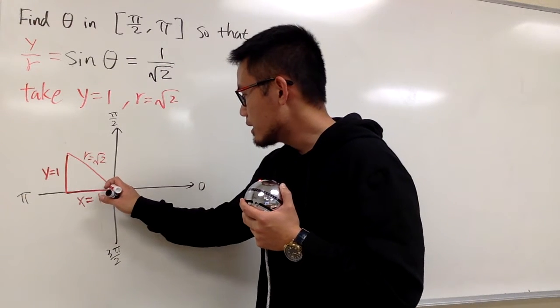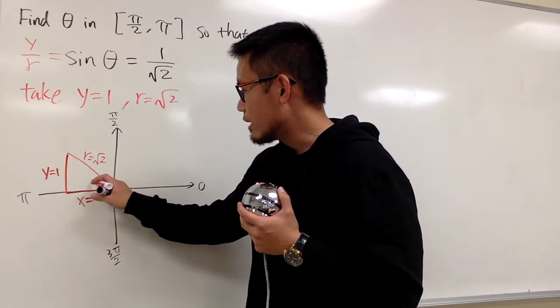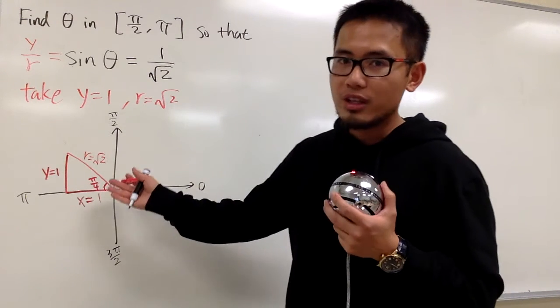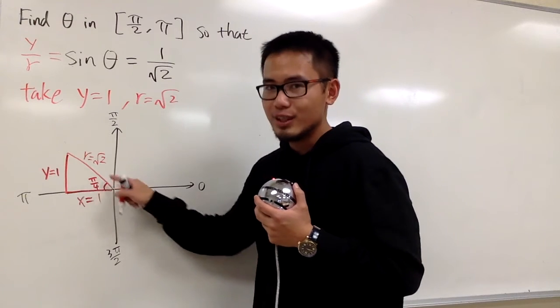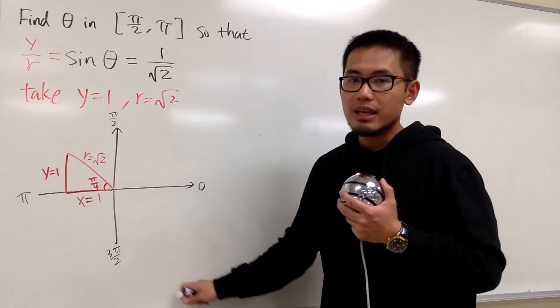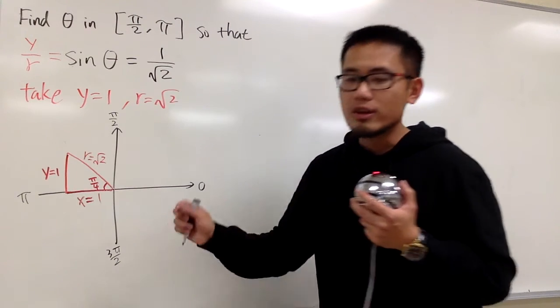So that means from here to here, the reference angle is pi over 4. That's 45 degrees. At the end, that's not the answer though, because that's just the reference angle.